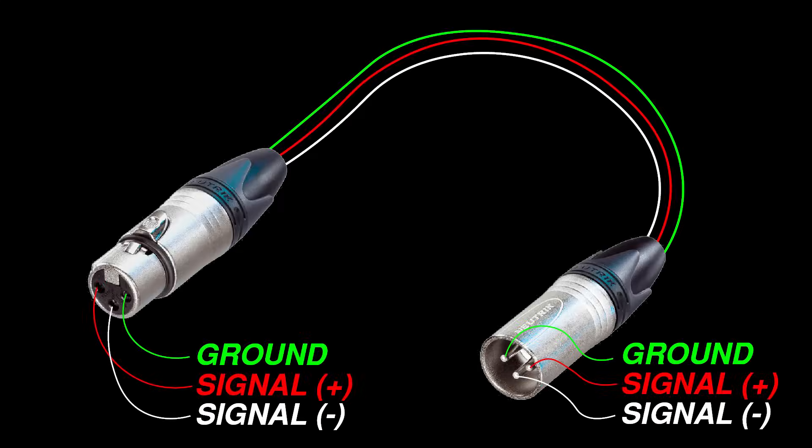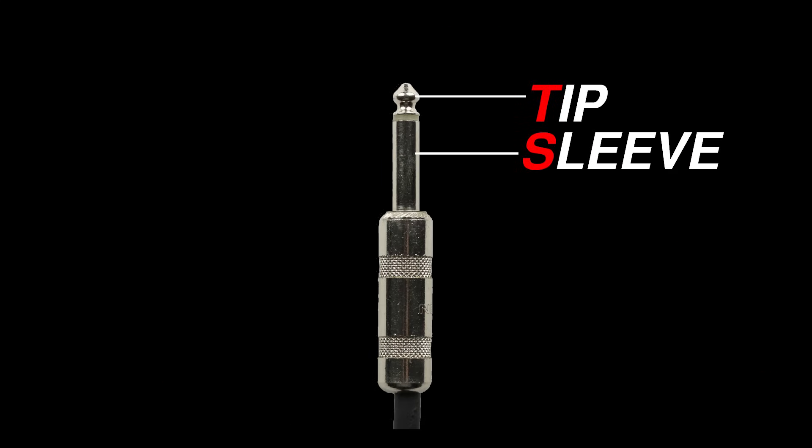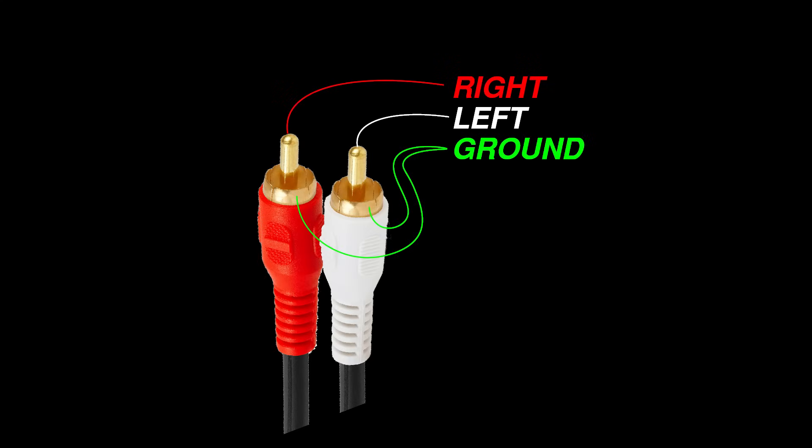When connecting audio devices together, you'll most likely be using one of these cables: XLR, ¼ inch TRS, ¼ inch TS, or RCA.